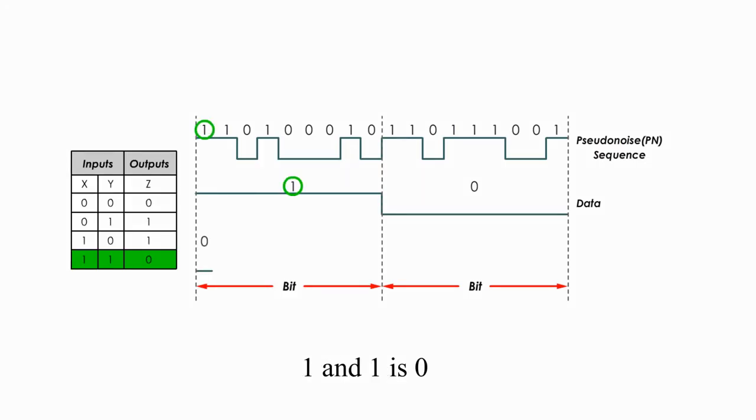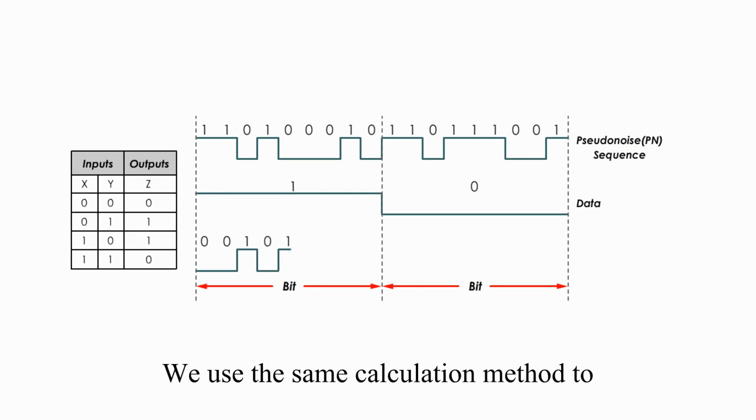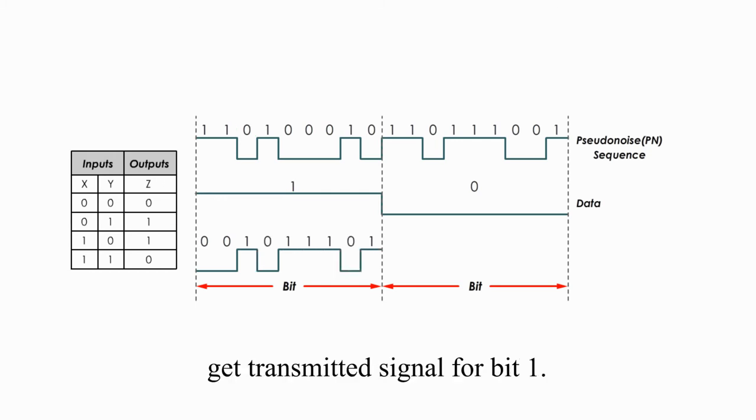1 and 1 is 0, 1 and 1 is 0 again, 0 and 1 is 1. We use the same calculation method to get transmitted signals for bit 1.